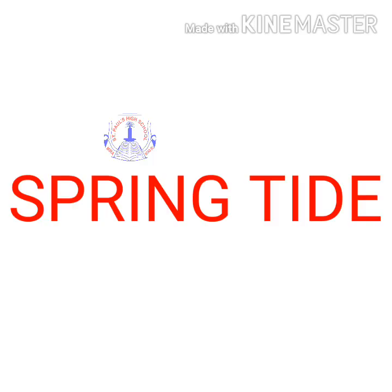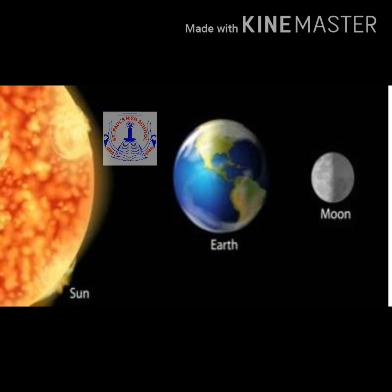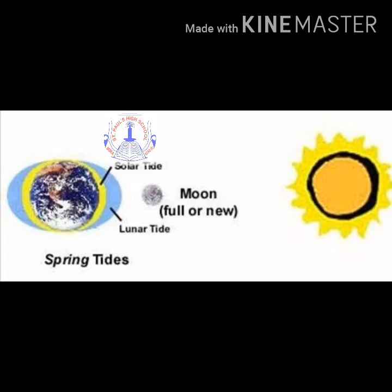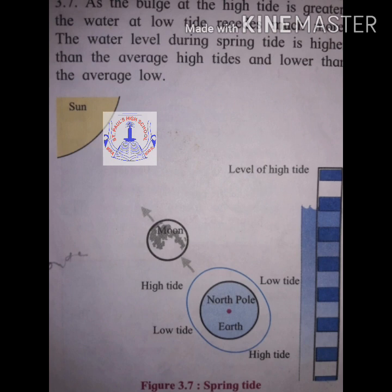Spring tides: on full moon day and new moon day, the gravitational pull of the sun and the moon act in the same direction. Due to this, the total pull increases. Hence, the tide on these days is much higher than the average high tide. This is known as spring tide. As the bulge at high tide is greater, the water at low tide recedes much more. The water level during spring tide is higher than the average high tide and lower than the average low tide.